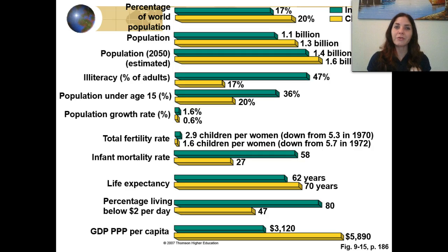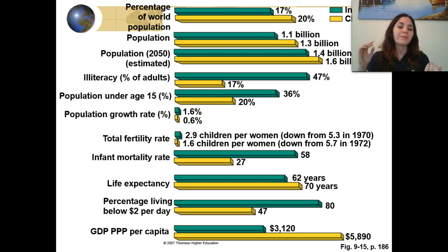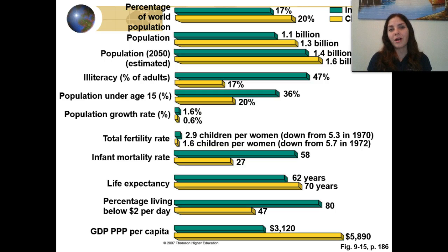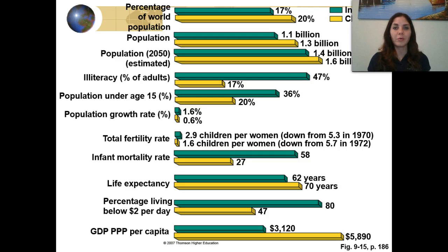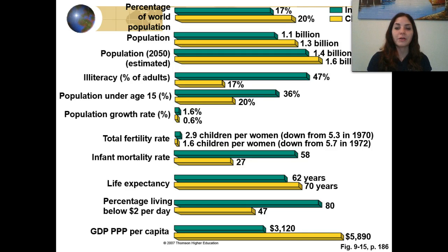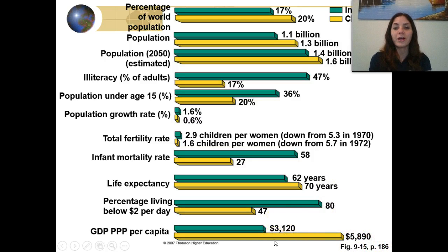The GDP per capita is not the family income — it's how much that country makes off of agricultural products, exports, oil, textiles, per capita. Once that number hits $4,000, people typically level off and live into their 70s — that's when life expectancy typically goes up. China's per capita is about $5,800, whereas India's is about $3,100, and their life expectancy is going to be much lower than China's as a result.